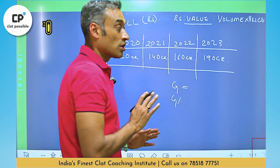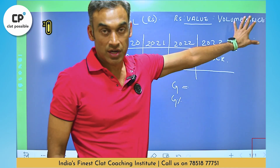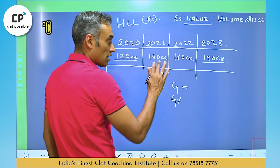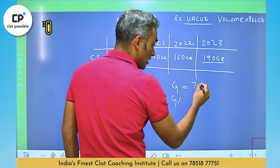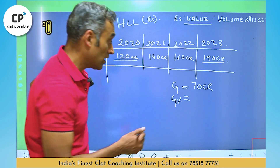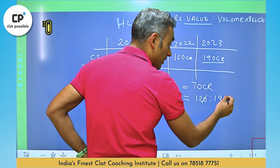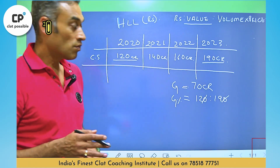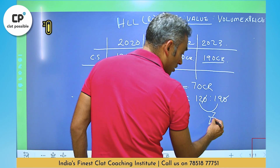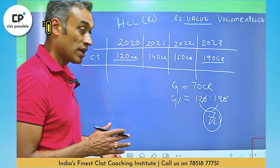We're looking at value here — volume and price are not mentioned unless it's a specific question. What is the overall growth? The final value is 190 crores and the initial value is 120 crores, so the absolute growth is 70 crores. For growth percentage, 120 has become 190. We use ratios: instead of 190 minus 120 upon 120, we simplify to 12 becoming 19, so it's 7 upon 12.